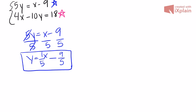Now we'll work out 4x minus 10y equals 18. We need to get y by itself, so let's first get rid of this x. We have a positive 4x, so the opposite is subtraction. We're going to subtract 4x from both sides.